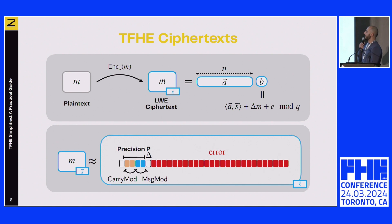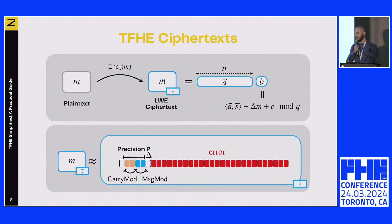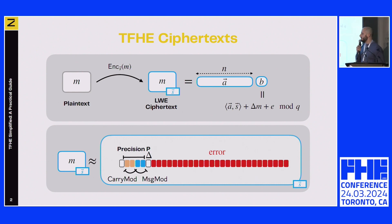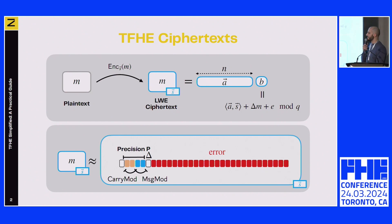We are going to use two kinds of notation: either a blue box with just the value of the plaintext to represent a ciphertext, or a more detailed description of what is inside. Key parameters include the precision P, representing the number of bits on which the plaintext is encrypted, and two specific moduli: the message modulus and the carry modulus. The carry modulus is there to absorb the linear operations we compute.